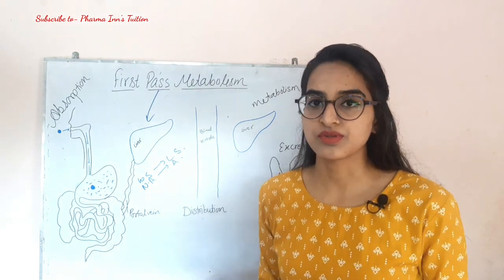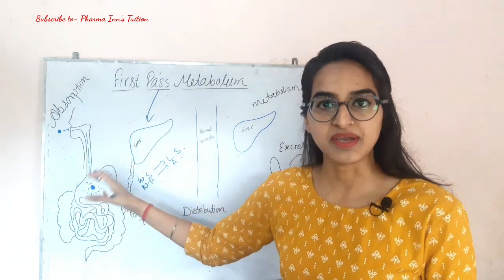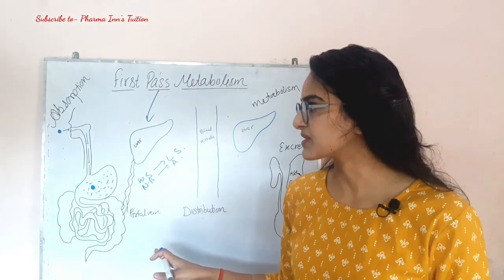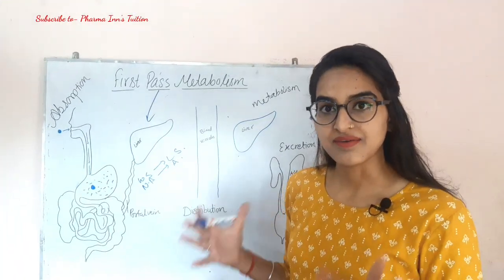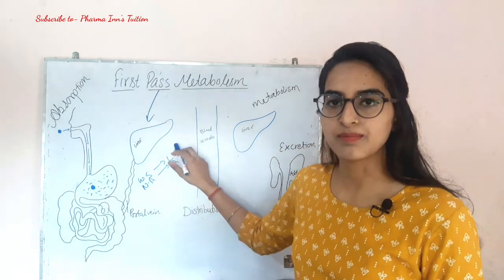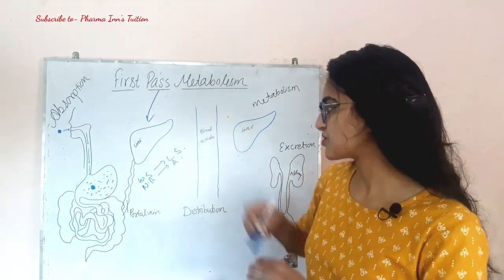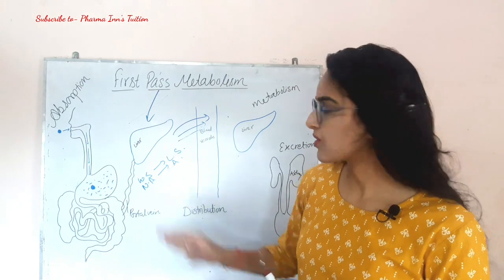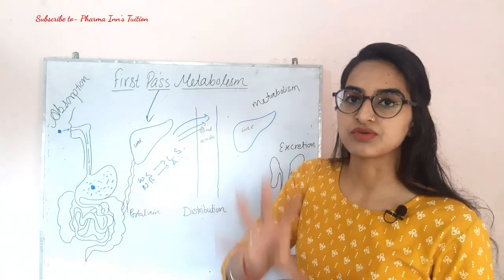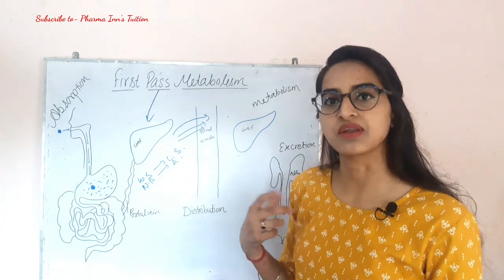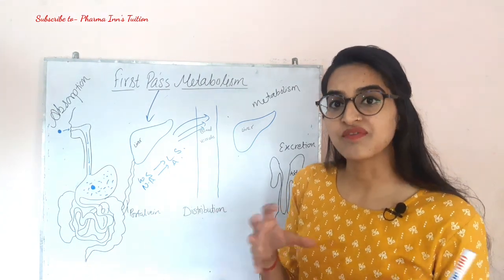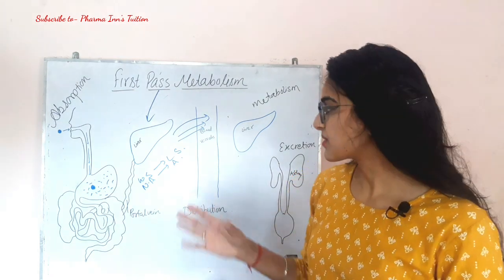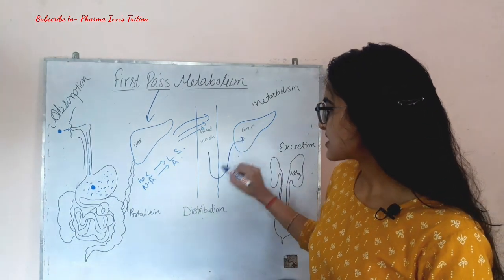Once the liver converts the drug to its activated, lipid-soluble form, the drugs are distributed through our blood vessels to the entire body. Wherever they find their receptor, they bind and produce action. When their binding affinity is exhausted, they are released and travel back to the liver.